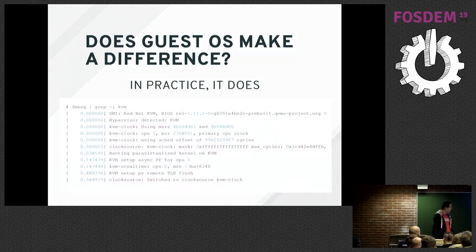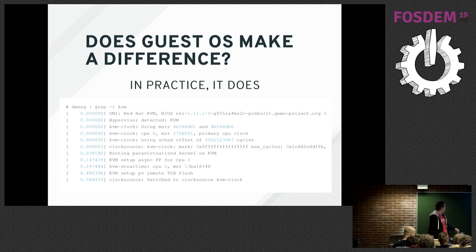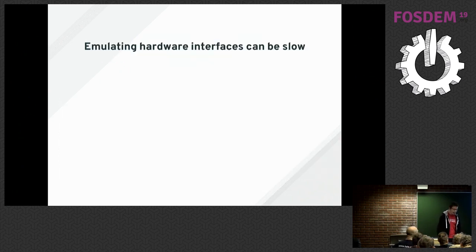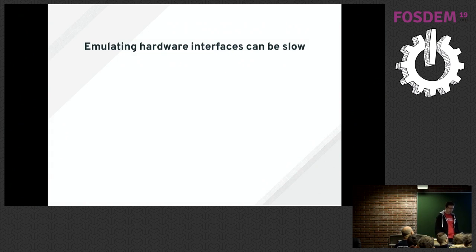But if you boot your Linux guest on KVM and take a look in the log, you will see something like this, and you will realize that your guest knows pretty much everything about the fact that it's running virtualized. It knows it's running on KVM and it's actually using some features. The thing is that when we are trying to emulate physical hardware in software, some interfaces were not designed for that and it can actually be slow in some cases.